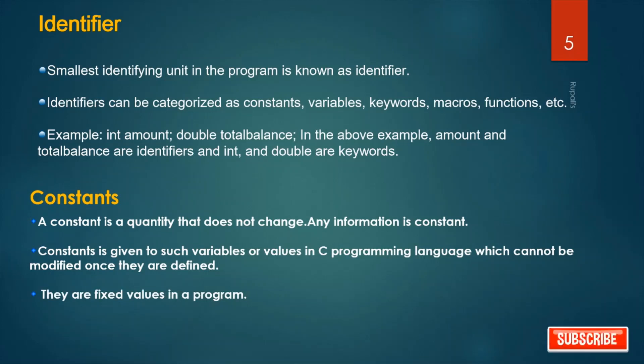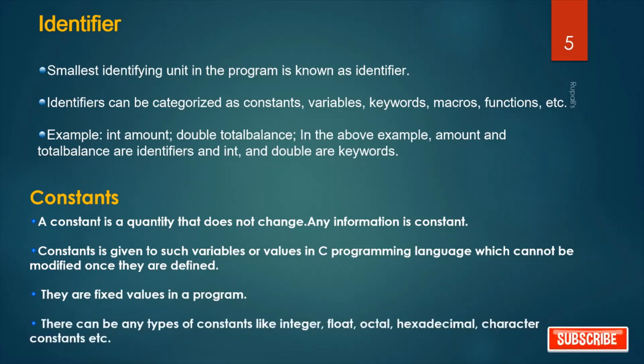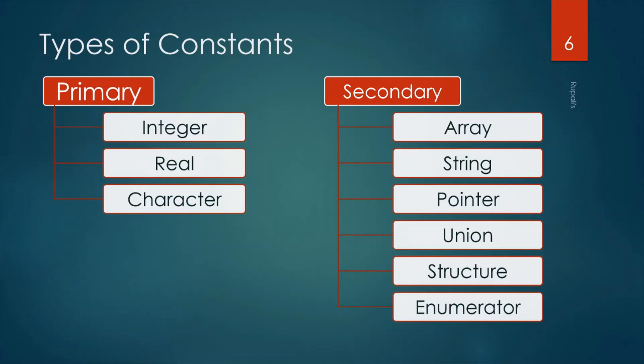There are fixed values in a program. There can be any type of constant like integer, float, octal, hexadecimal, character constants, etc. Types of constant: Primary constants are integer, real and character. Real means float number. Secondary constants are array, string, pointer, union, structure, enumerator, etc.